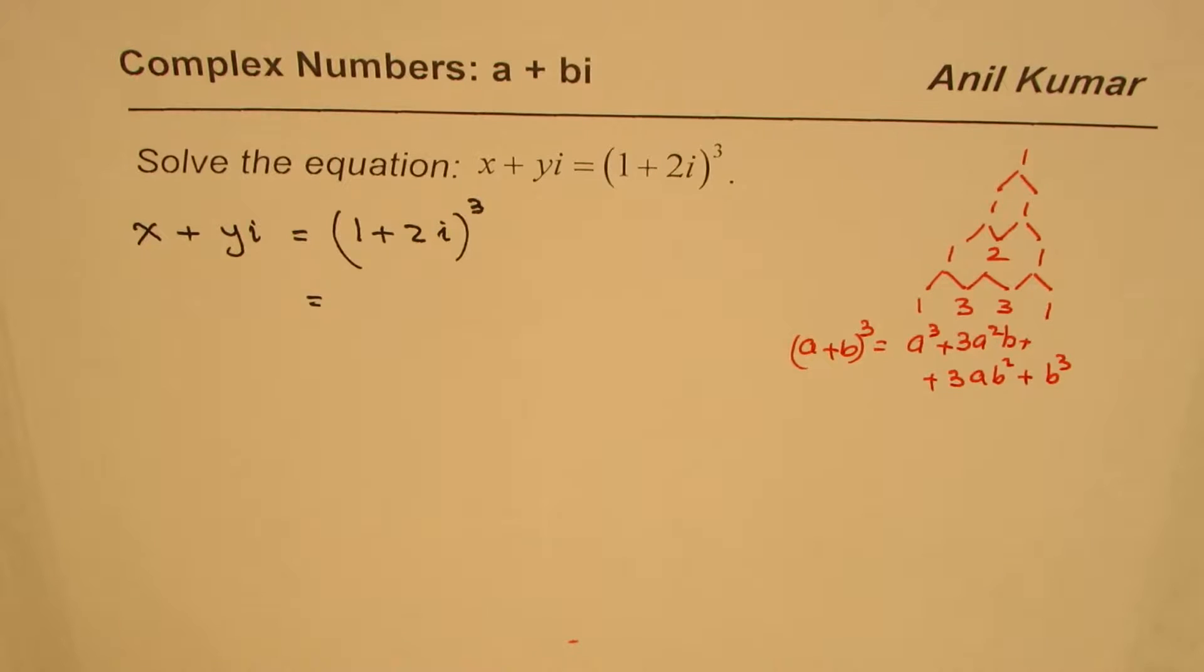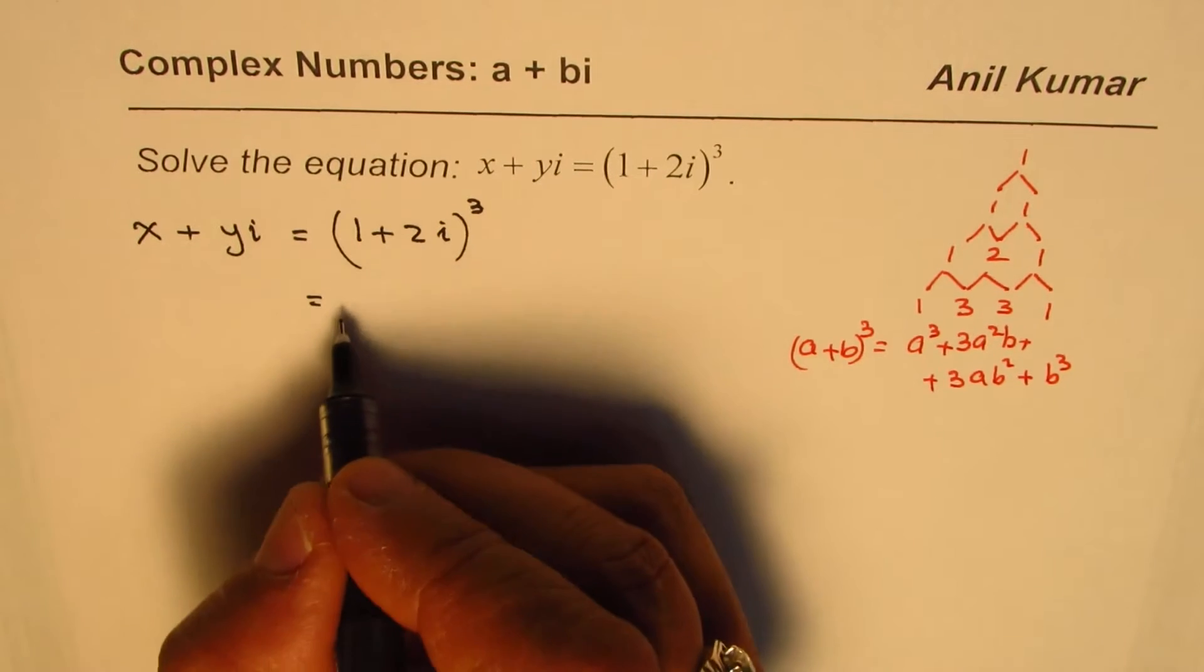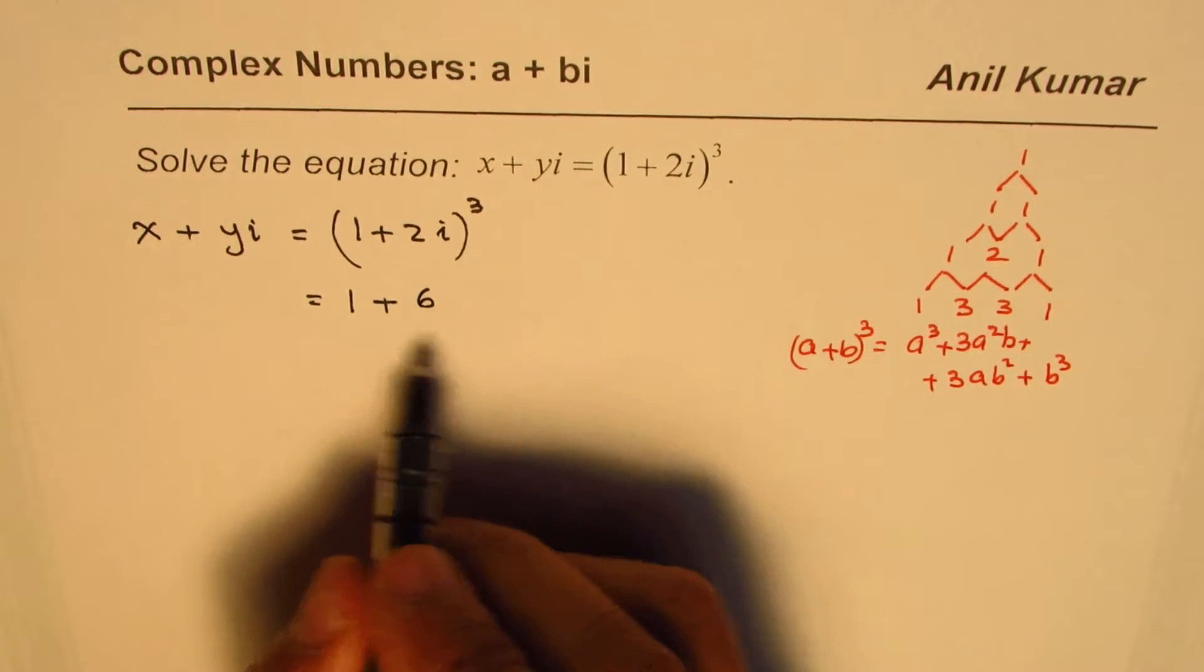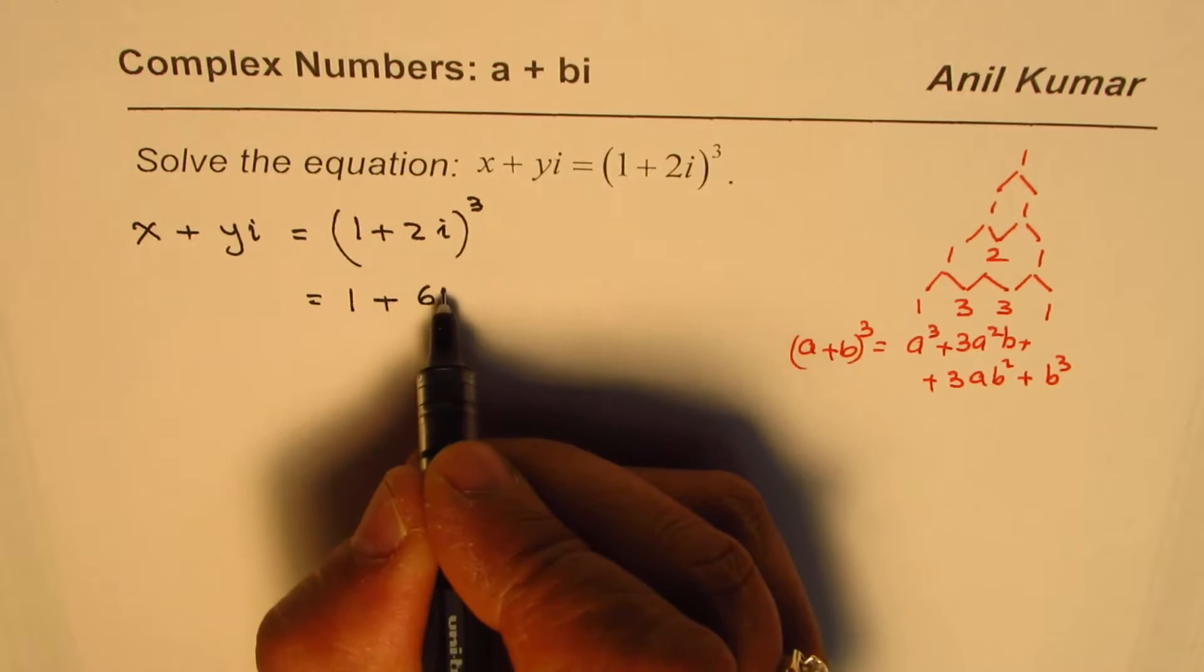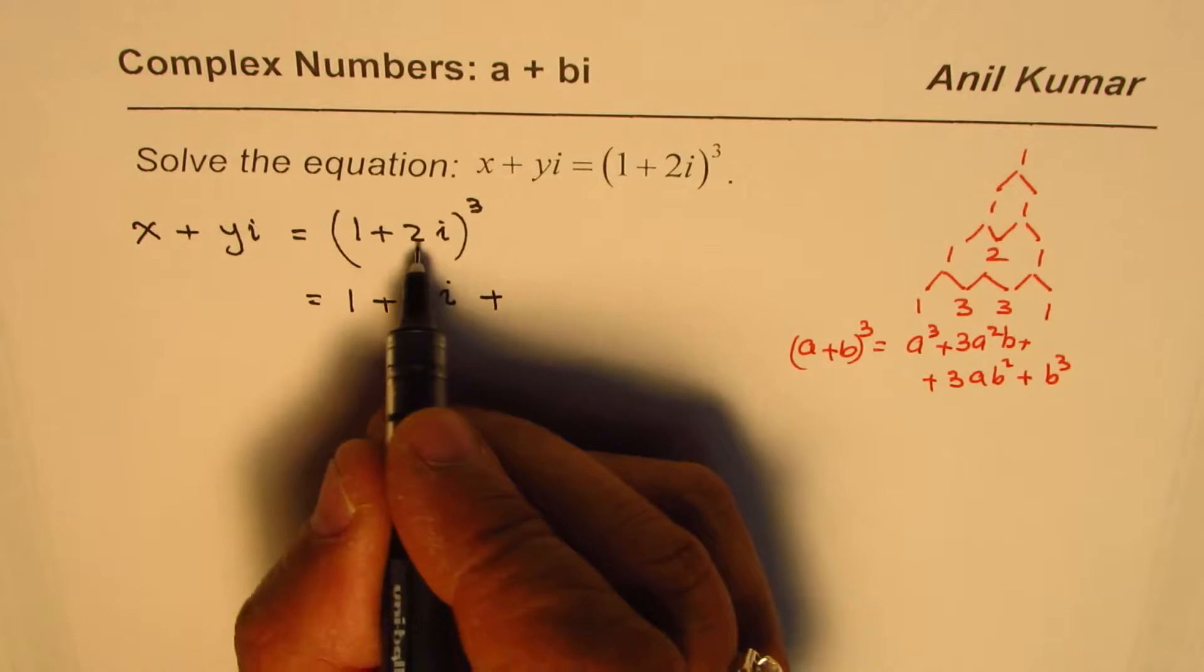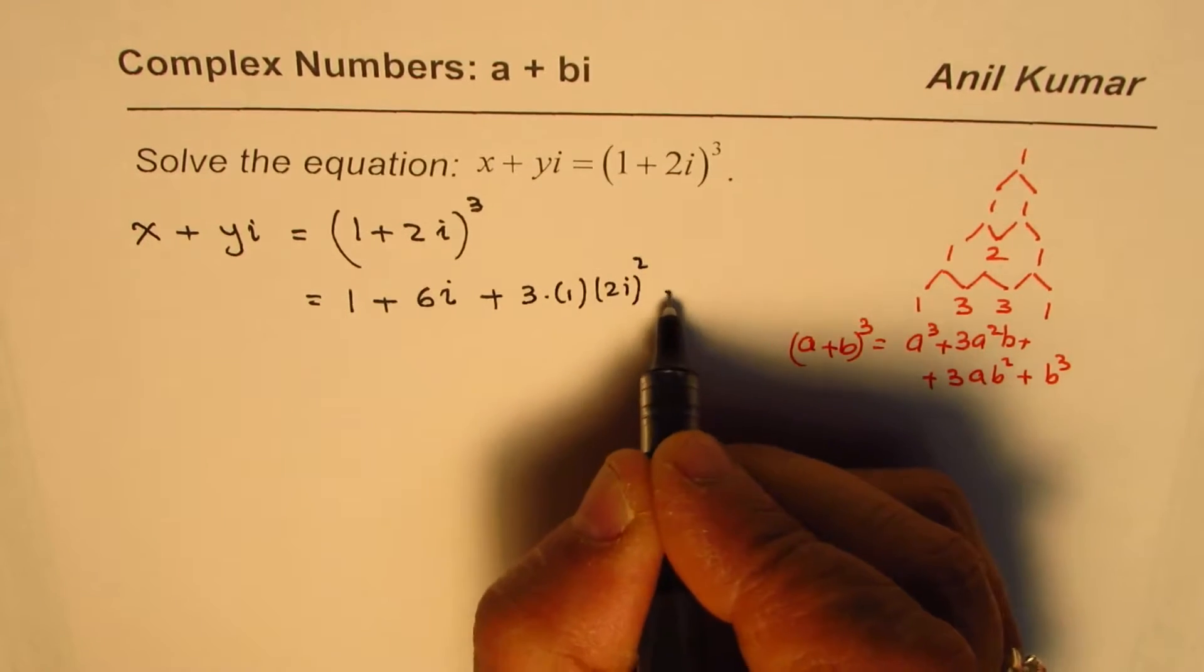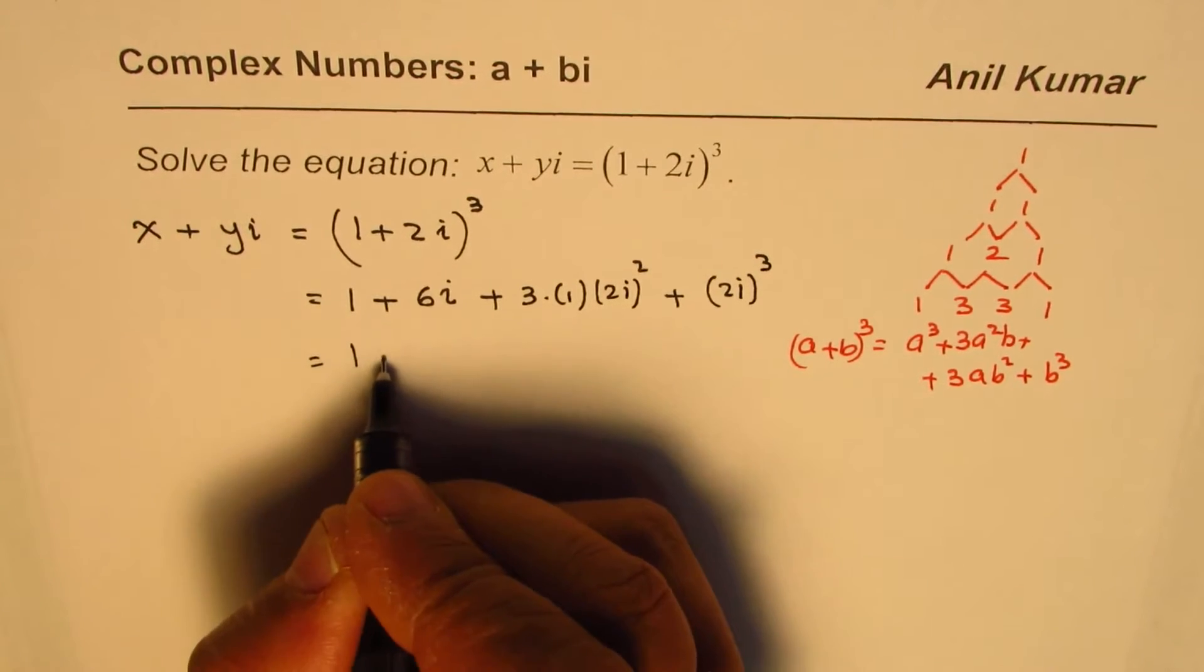So any method you can adopt to expand it. I'll straight away use the formula, so it is 1³ plus 3 times these two numbers which is 6, 1² is 1, so 6 times i, plus 3 times 1 times the square of 2i, plus (2i)³.